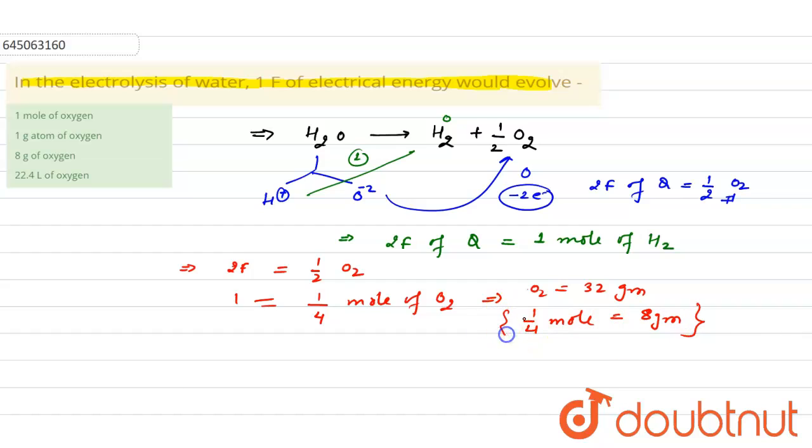So if you see the options: first option is one mole of oxygen - no. Two faraday provides half mol, so four faraday will provide one mole, so it is wrong. One gram atom of oxygen means one mole, it is also wrong. Eight grams of oxygen - this is the correct answer. 22.4 also means one mole. So third option is the correct answer.